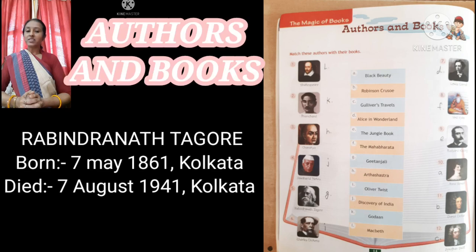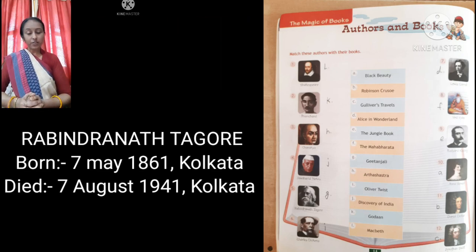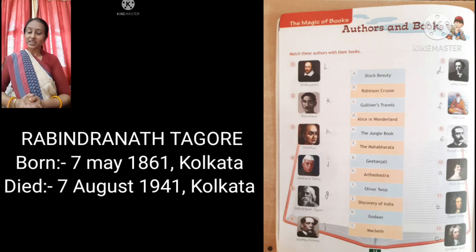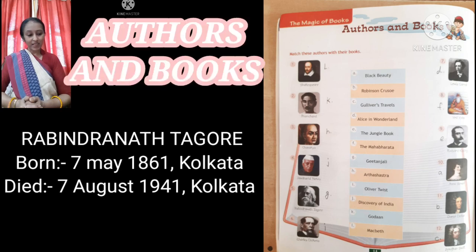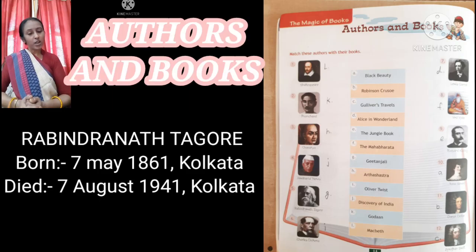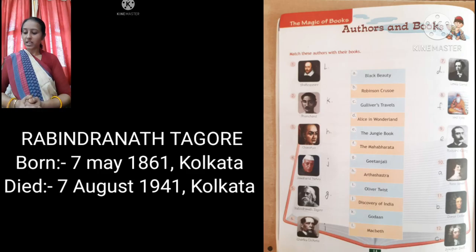The 5th one is Rabindranath Tagore. Rabindranath Tagore composed our National Anthem. He is a Bengali poet, writer, philosopher, and painter — a man of various skills. He was born on 7th of May 1861 in Kolkata and died on 7th of August 1941 in Kolkata itself. The name of his book is Gitanjali.